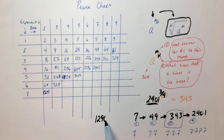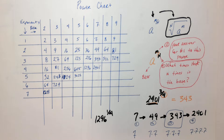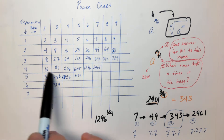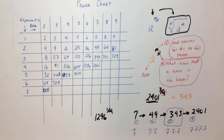1296 to the 1/4 power. 6. Because you just see that's the 4th power — here's all the 4th powers, it's that one. It's 6. The first step is 6.